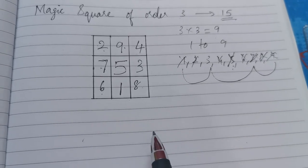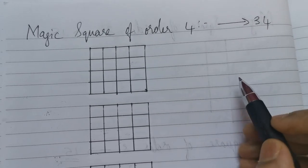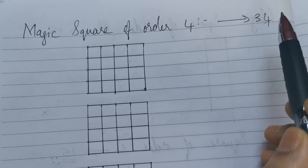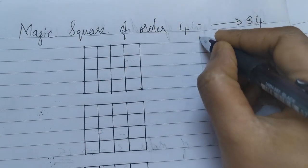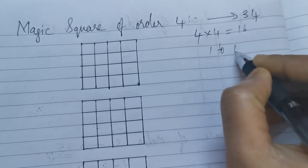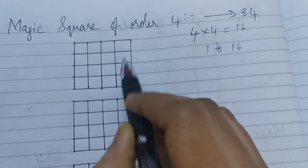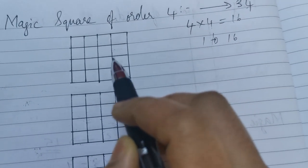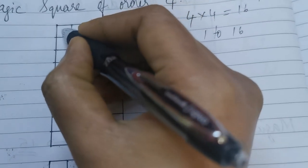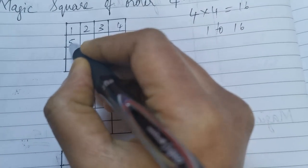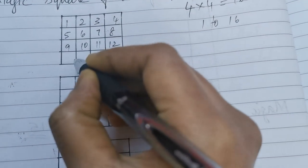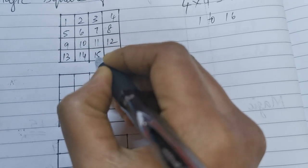Now let us look into magic square of order 4. The magic number of a magic square of order 4 is 34. That means when we add the numbers horizontally, vertically or diagonally, the sum should be 34. An order 4 square has 4 rows and 4 columns, so we fill numbers from 1 to 16. The first step is to fill in numbers from 1 to 16 in order: 1, 2, 3, 4, 5, 6, 7, 8, 9, 10, 11, 12, 13, 14, 15 and 16.